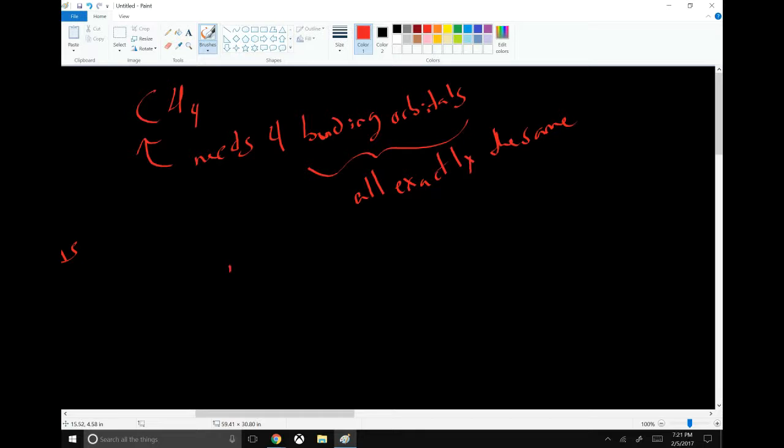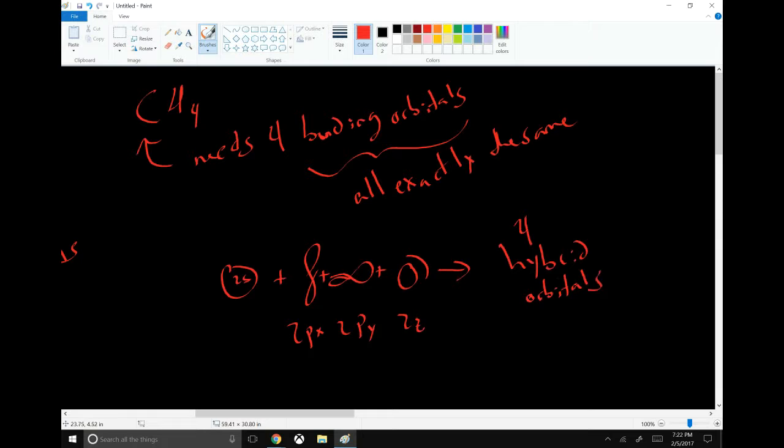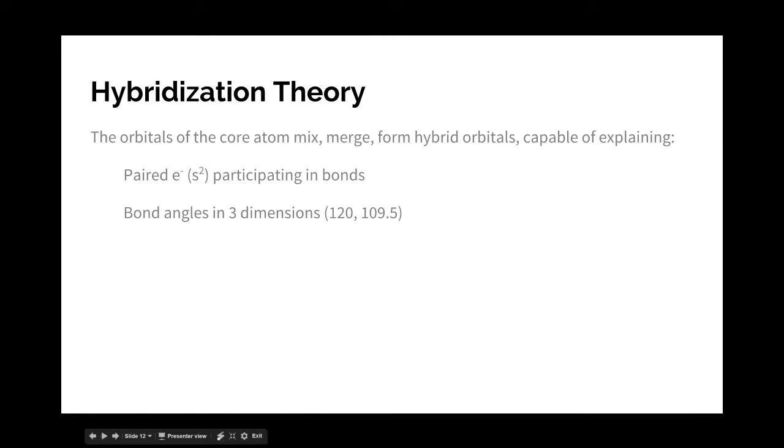Fortunately, carbon has four orbitals available. It has its 2s and its 2p orbitals: 2px, 2py, and 2pz. So in order to make its four bonding orbitals, it will add all of these together to make hybrid orbitals. And each of those orbitals will be exactly the same, and it will be a mix of the orbitals that came in.